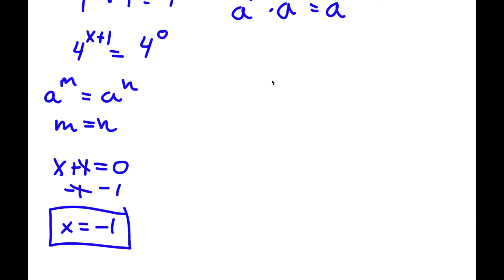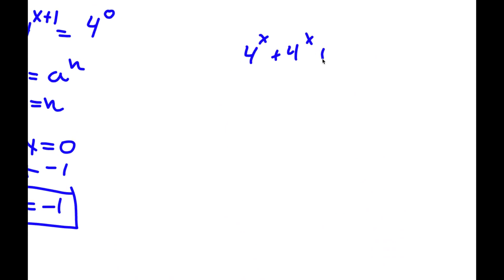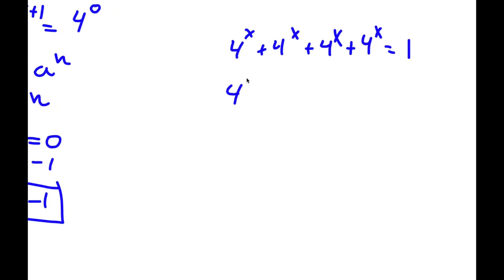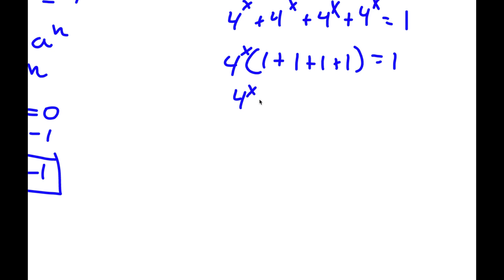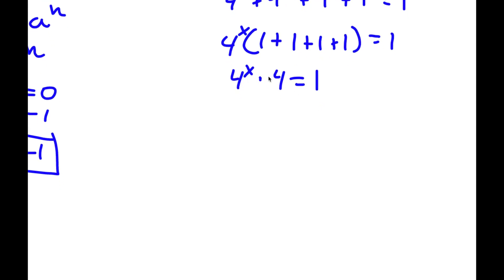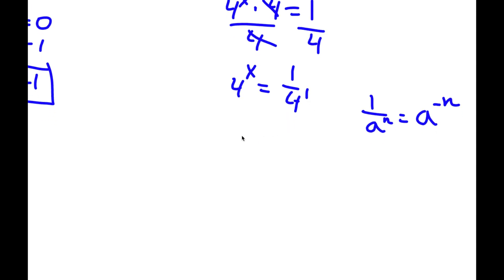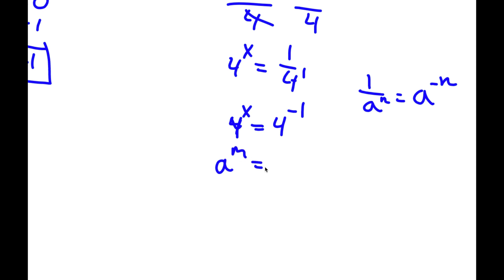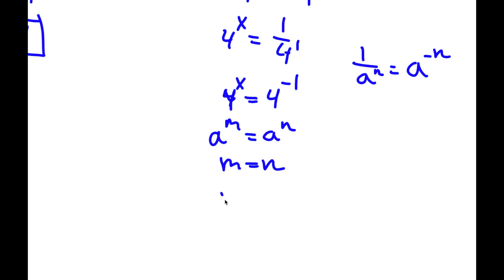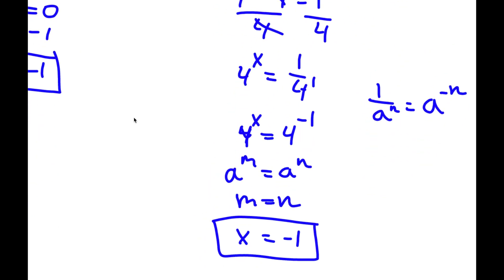Now another method: starting again with 4 to the power of x plus 4 to the power of x plus 4 to the power of x plus 4 to the power of x equals 1, I factor out 4 to the power of x to get 4 to the power of x times 4 equals 1. Instead of the previous approach, I divide both sides by 4, leaving 4 to the power of x equals 1 over 4. Now 1 over a to the power of n equals a to the power of negative n, so 1 over 4 to the power of 1 equals 4 to the power of negative 1. So 4 to the power of x equals 4 to the power of negative 1, meaning x equals negative 1.